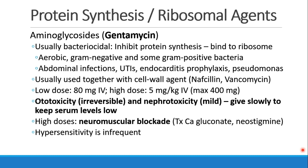Ototoxicity can occur mostly at high doses. The low dose of 80 milligrams is pretty safe, but at high doses of, say, 5 milligrams per kilogram IV, we can see ototoxicity or maybe some kidney injury. It should be given slowly in order to keep serum levels as low as possible. Also at high doses, we may see some neuromuscular blockade, and that would be treated with calcium gluconate or neostigmine. Hypersensitivity to these drugs is infrequent.